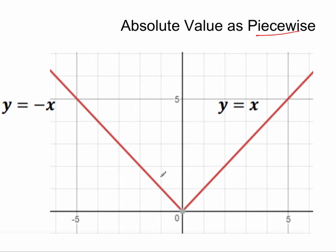So the absolute value function, when x is negative, is y equals negative x. And when x is positive, y equals x.